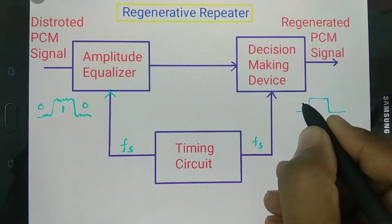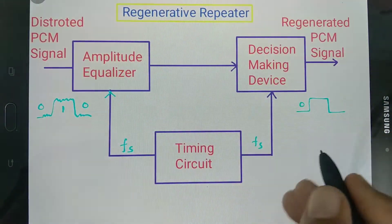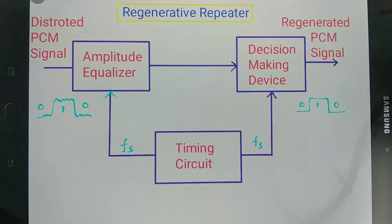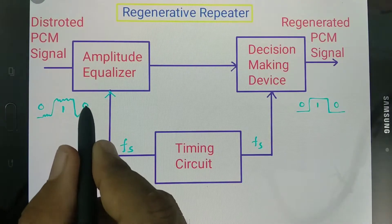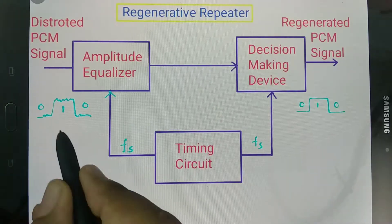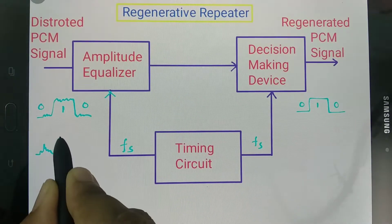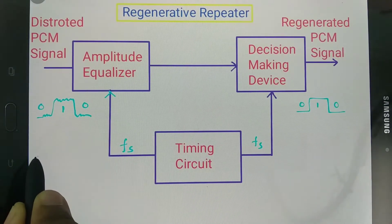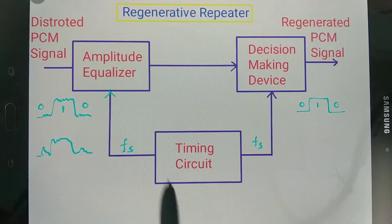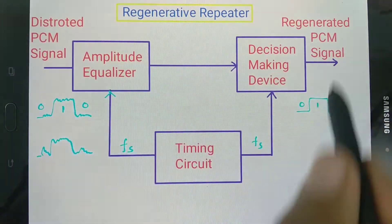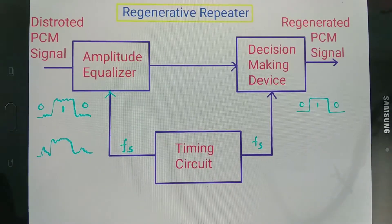After the regenerative repeater, the signal is a pure digital signal and can be retransmitted over a channel. We use the regenerative repeater to increase communication distance, because when you send a signal, attenuation and noise distort it. If sent over a further larger distance, the signal deteriorates further. So between transmitter and receiver, we use regenerative repeaters to increase communication distance.